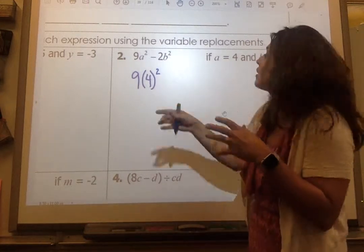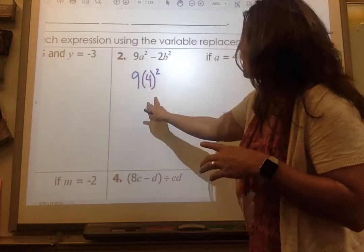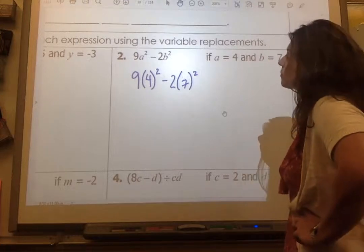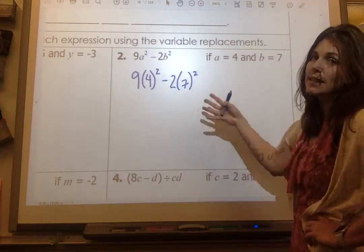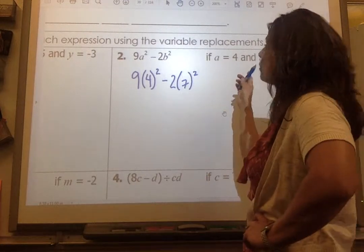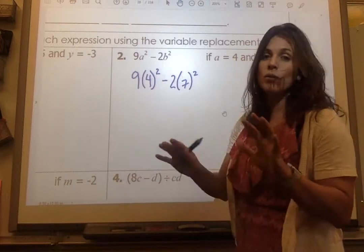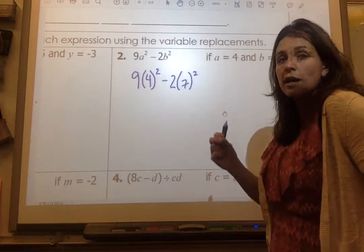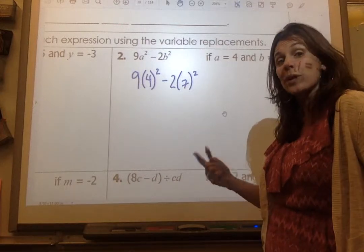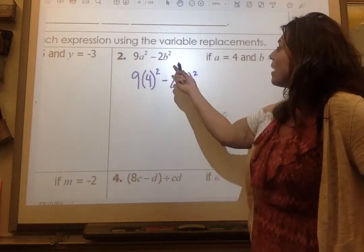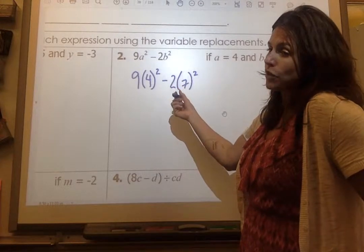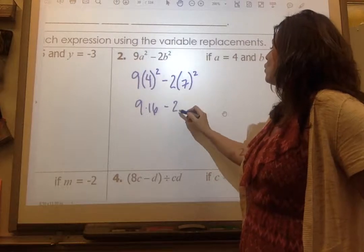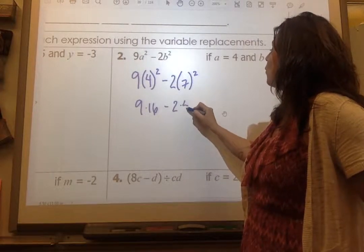I can put in parentheses 4. 4 stays the same and I'm just putting 4 in parentheses. This square stays outside the parentheses. The only thing that goes inside those parentheses is my value of a. And then I get minus 2 times 7 squared.